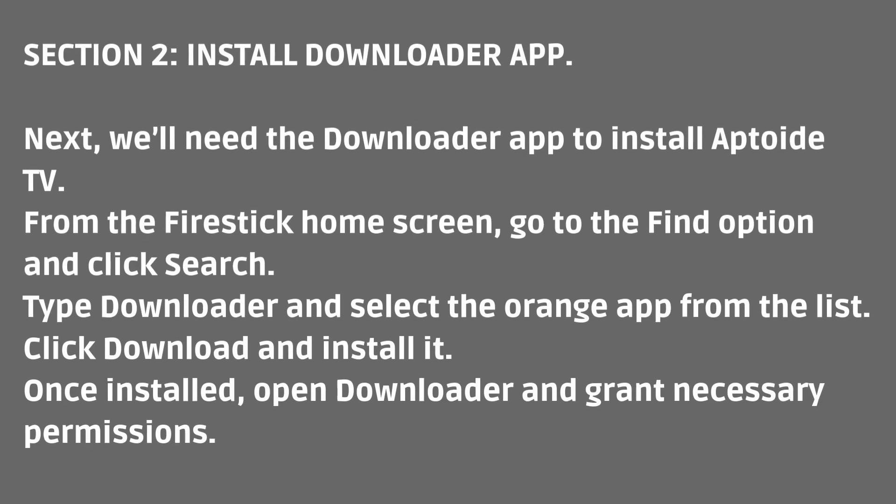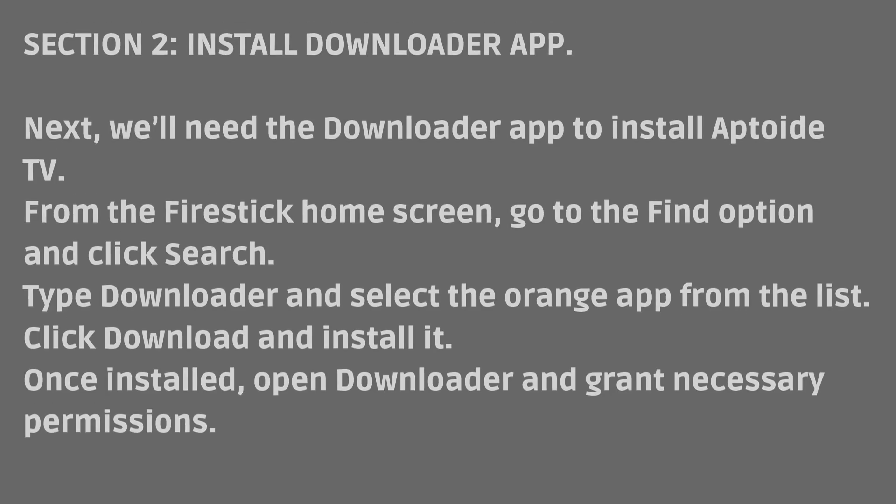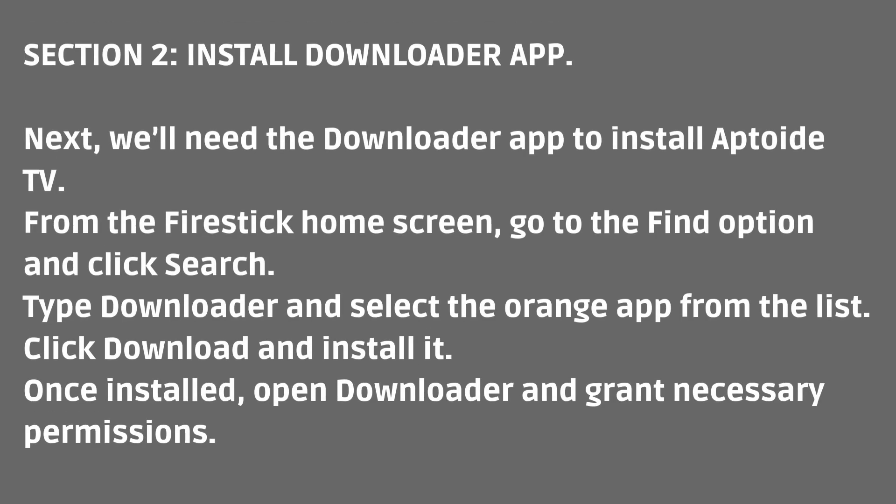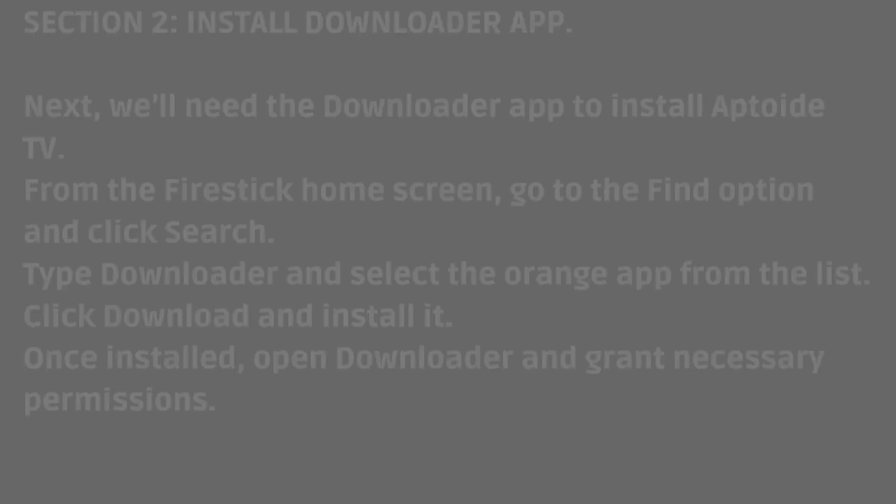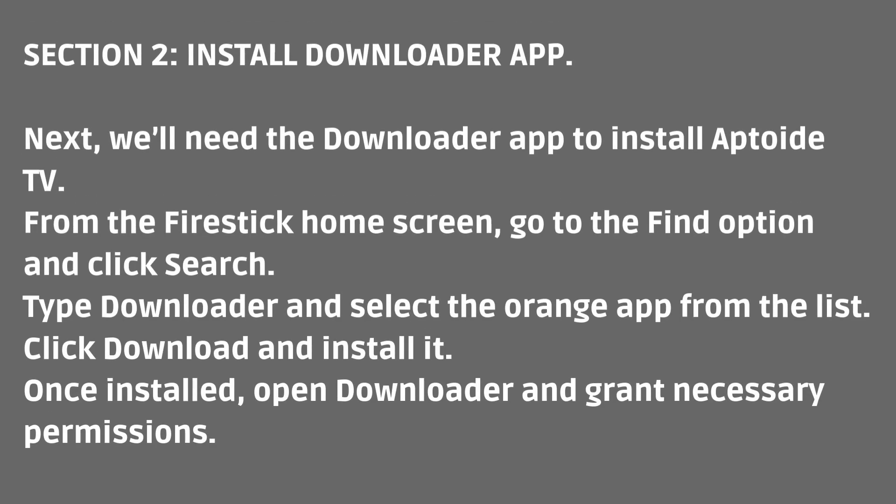Install Downloader App. Next, we'll need the Downloader app to install Aptoide TV. From the Fire Stick home screen, go to the Find option and click Search. Type Downloader and select the orange app from the list, then click Download and install it.